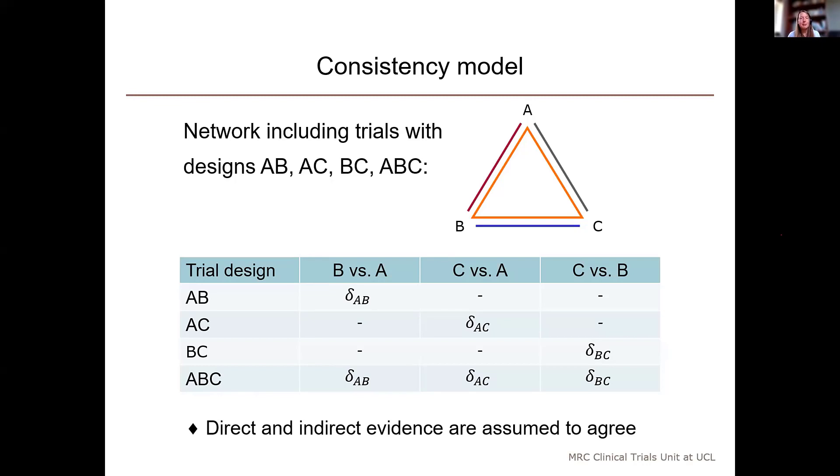So, this is where we're assuming that direct and indirect evidence agree for every comparison. And as I mentioned before, this might not be true if, for example, the patients in the AB trial are systematically different from those in the ABC trial, perhaps because they weren't eligible to receive treatment C.